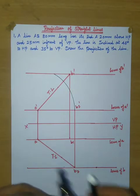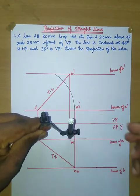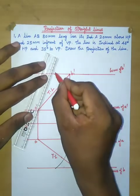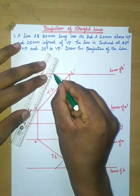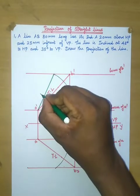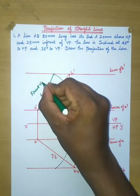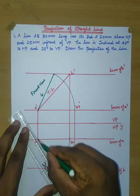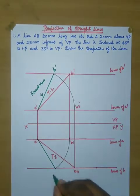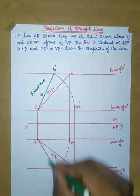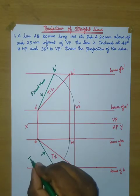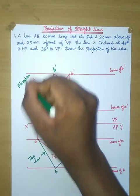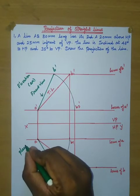With A as center, take measurement of A to B1' and cut an arc on the locus of B'. Then join the A' point to the intersection point. This line is going to be the front view line. Now join this point and this point — name this point as B' and this point as B. Name this line as the top view. In the front view, mark the two points as B'.